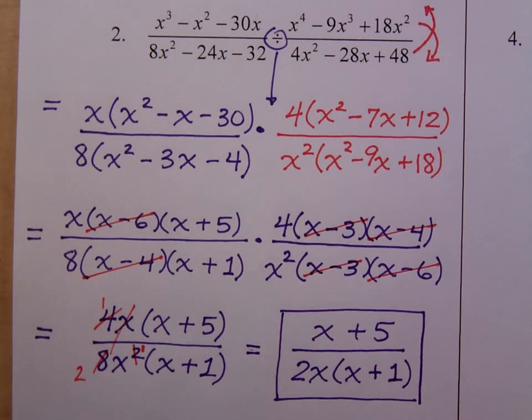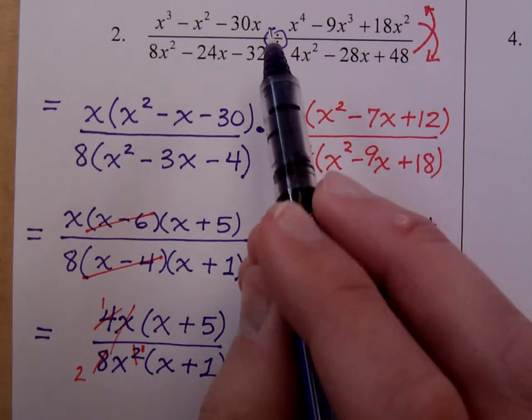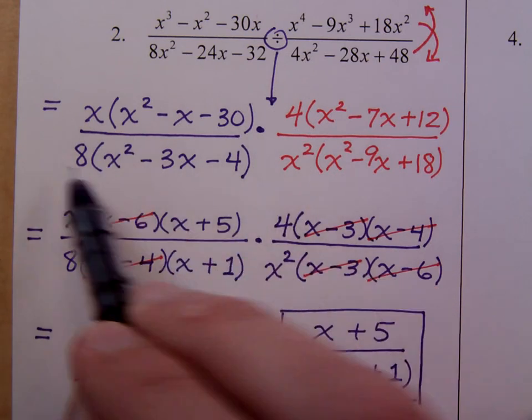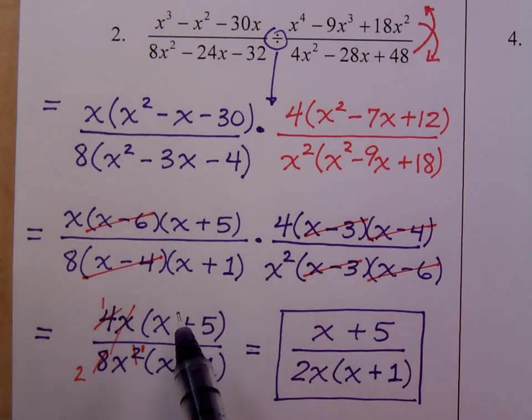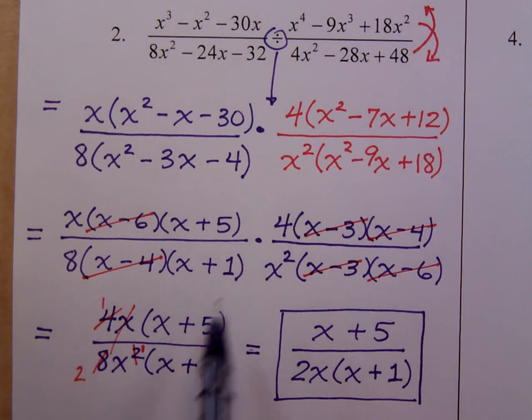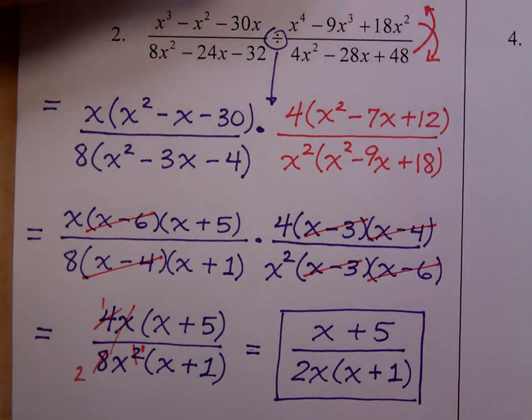This one had a lot going for it. You had to turn the division to multiplication, take out common factors and then finish factoring. And even then, these common factors could still be reduced. That's multiplication and division.